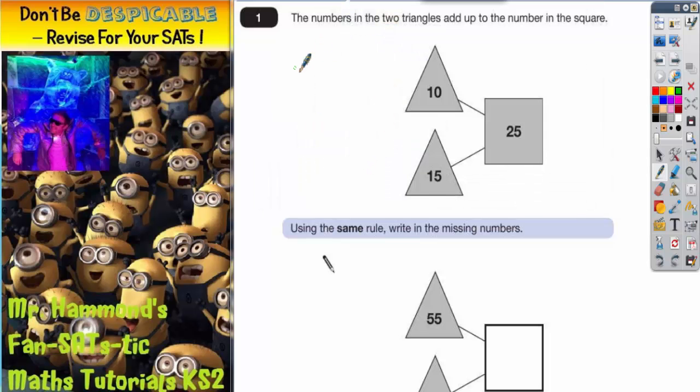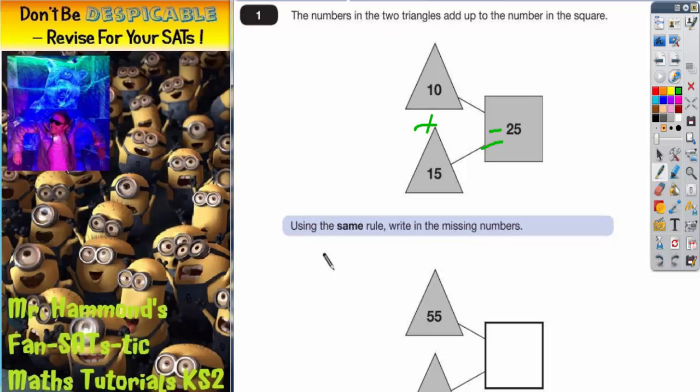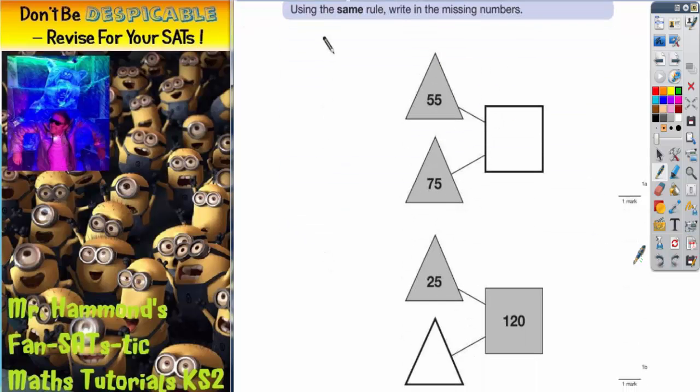Okay, welcome to question 1. It says the numbers in the two triangles add up to the number in the square. An example we've got is that 10 plus 15 equals 25. Okay, so what we've got to do, using the same rule, we've got to write in the missing numbers in this square.